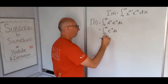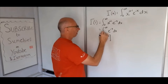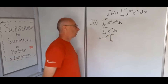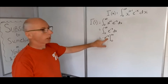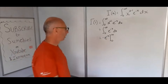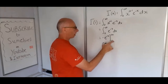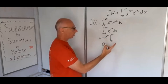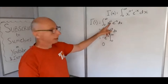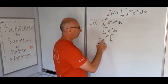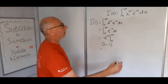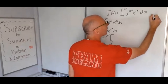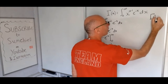Integrating gives minus e to the minus x, evaluated from 0 to infinity. At the upper limit, e to the minus infinity approaches 0. At the lower limit, e to the minus 0 equals 1, so we get minus minus 1, which equals 1. Therefore gamma of 1 equals 1.